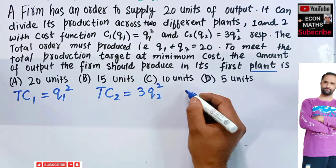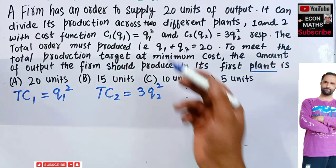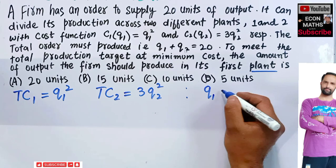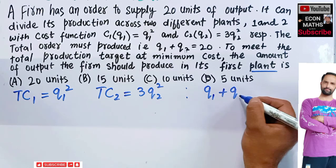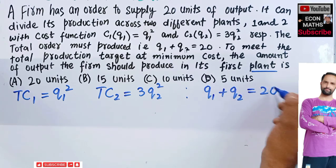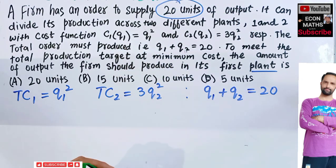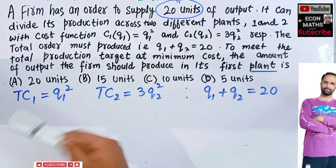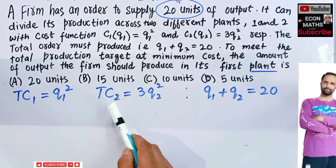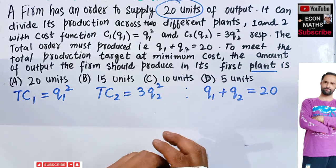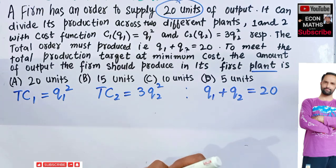We are also told that the total output to be produced across the two plants — that is, output produced in Plant 1 plus output produced in Plant 2 — should equal 20 units. The total cost in Plant 1 is Q1 squared and in Plant 2 is 3Q2 squared. We want to minimize the total cost.